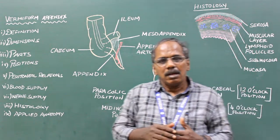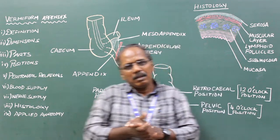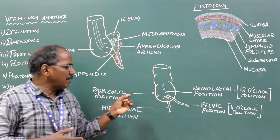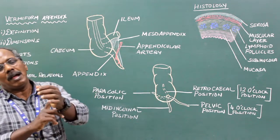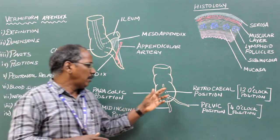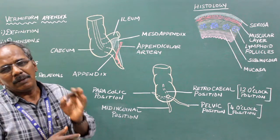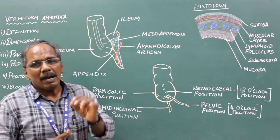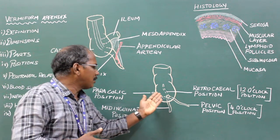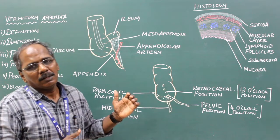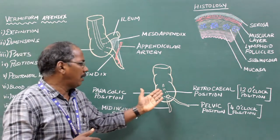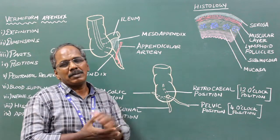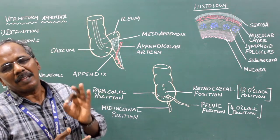Positions. The appendix is situated in the right iliac fossa. There are various positions, often indicated with the hour of a clock. Number 1 is the retro-cecal or retro-colic position, which is the 12 o'clock position, where the appendix runs above and behind the cecum and ascending colon. It is the commonest position, found in 65% of cases.